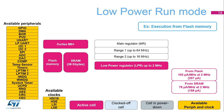In low-power run mode, the CPU is clocked and programs can be executed from flash or SRAM. Additionally, the flash can be completely unpowered to save power. The system clock is limited to 2 MHz. The main regulator is switched off and supply to digital blocks is provided by the low-power regulator. In low-power mode, all peripherals can be active.